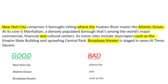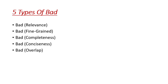The bad key phrases are words like 'where', 'the', 'such as', and 'they' — they are bad and making no sense. There are five types of bad: bad relevance, bad fine grained, bad completeness, bad conciseness, and bad overlap.